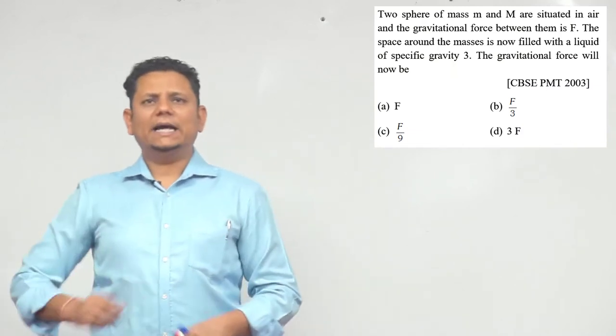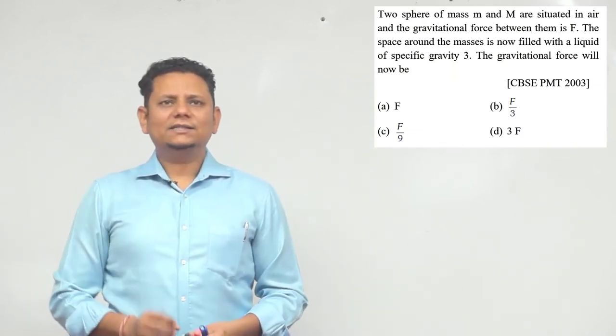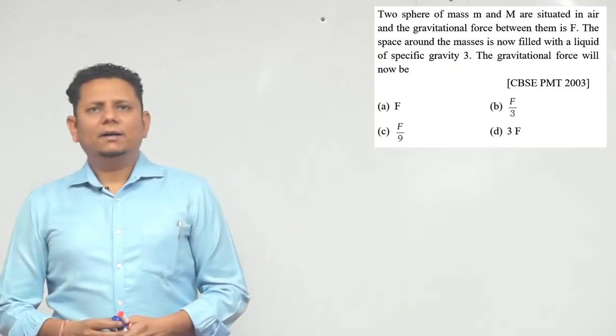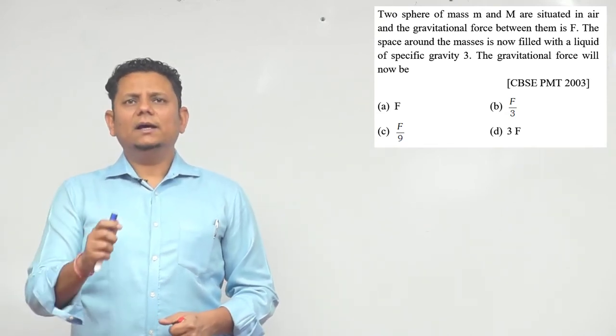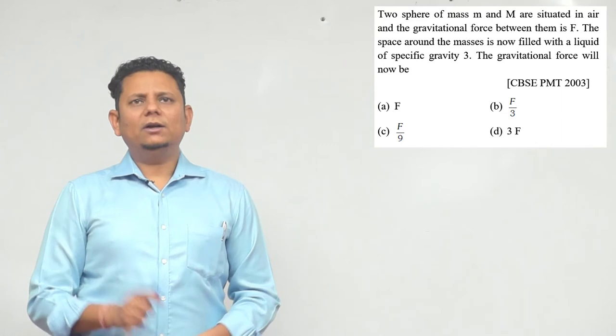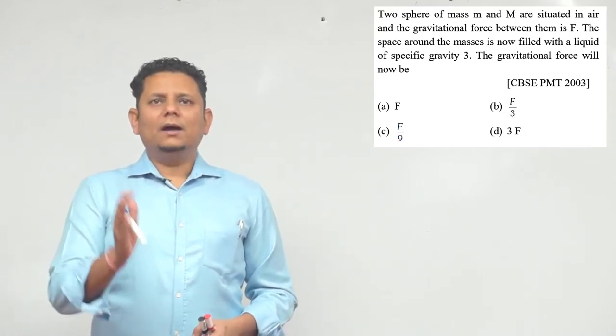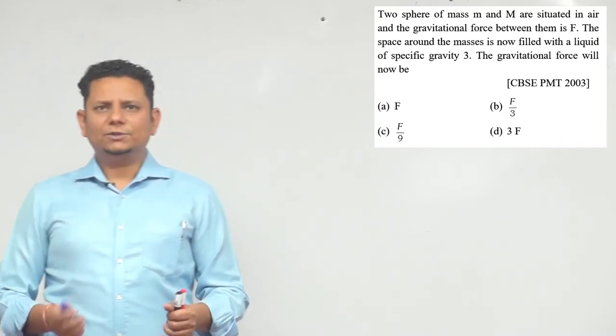Next question: Two spheres of mass m and M are situated in air and the gravitational force between them is F. The space around the masses is now filled with a liquid of specific gravity 3. What will happen to the gravitational force?